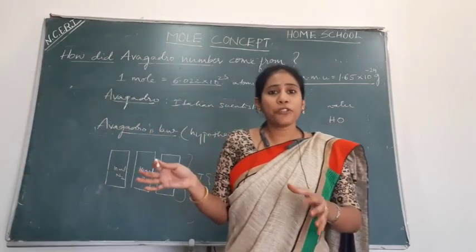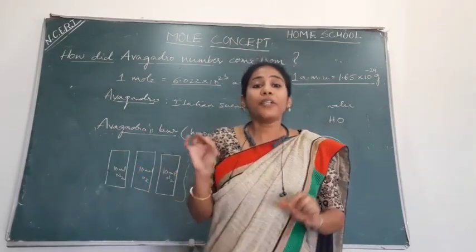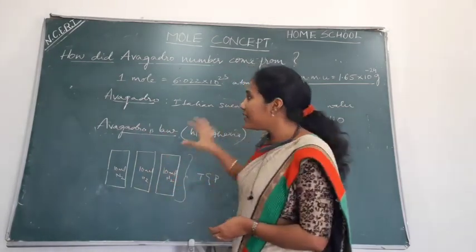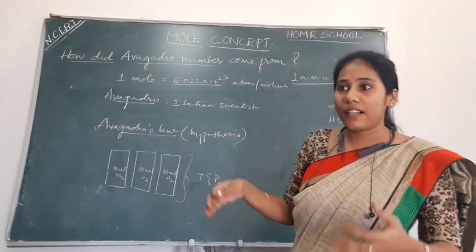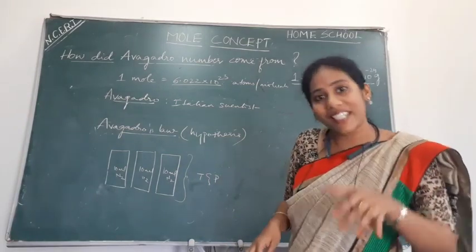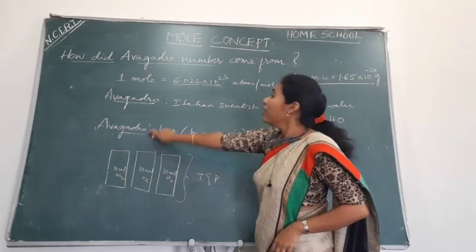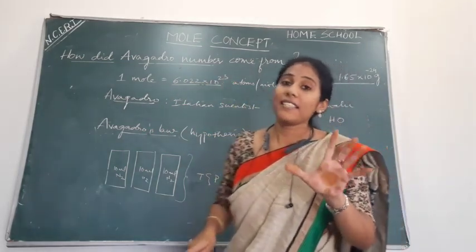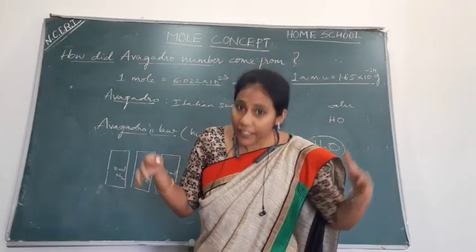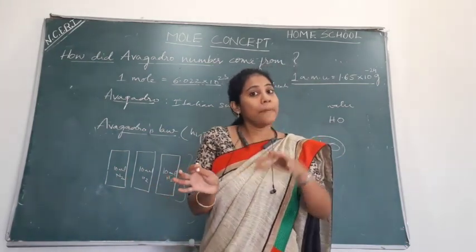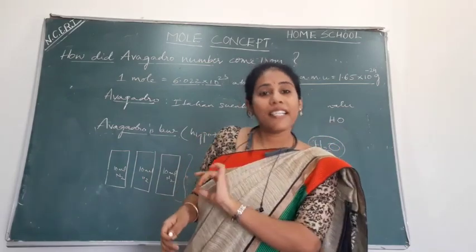Avogadro made a lot of contributions to the field of chemistry. That is why, to give honor and a token of respect to this person, later European scientists arrived at a number through various calculations — based on assumption. The number was 6.022 into 10 to the power of 23. In respect of Avogadro, they gave his name to this number and called it Avogadro's number. So Avogadro did not invent or calculate this number — he did not even know this number.